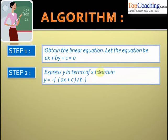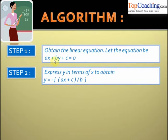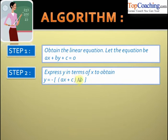In the second step, express y in terms of x to get y equal to minus of ax plus c, whole divided by b. So when we express y in terms of x, we get the expression of y as minus of ax plus c, whole divided by b.